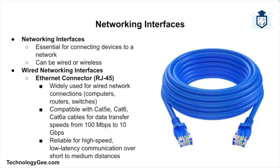Networking interfaces are crucial for connecting devices to a network either through a wired or wireless connection. Starting with wired interfaces, the RJ45 connector is one of the most common networking connectors. RJ45 connectors are used with ethernet cables to connect devices like computers, routers, and switches to wired networks, typically with Cat5e, Cat6, and Cat6a cables providing data transfer speeds from 100 megabits per second up to 10 gigabits per second. It is a standard and reliable method for achieving high-speed, low-latency connections over short to medium distances.